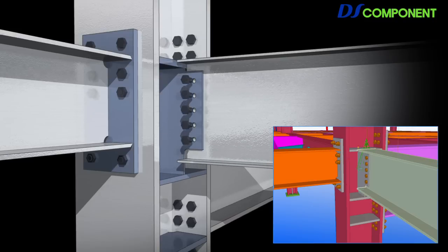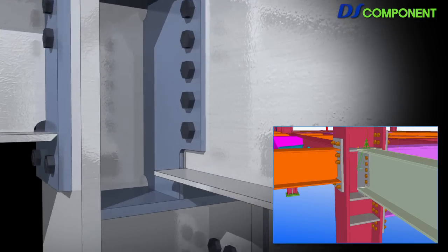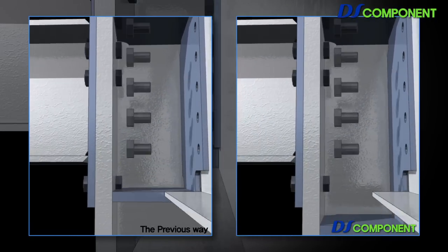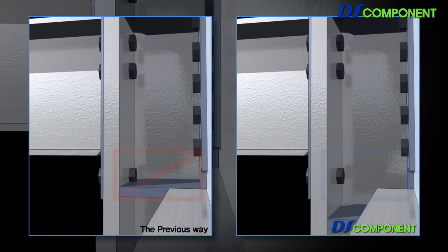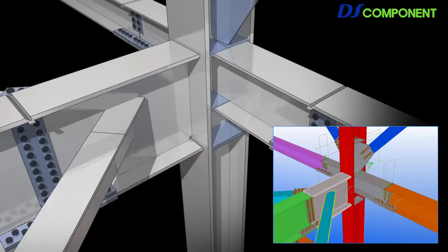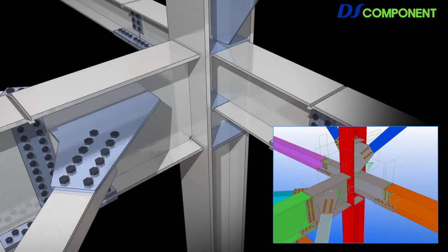The interference area is checked, and the component is automatically modified so that errors that may occur during design and construction are blocked. Also, shortening construction period effect is excellent owing to improving quality of design.